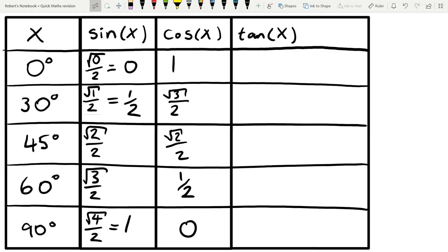which we've left a bit of a space for, is that tan of x is equal to sin x divided by cos x. So all we're going to do is we're going to divide the first column by the second column. So we're going to do 0 divided by 1, which is 0.